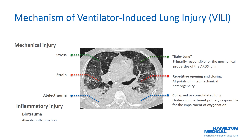The mechanisms of ventilator-induced lung injury are resultant of three specific attributes. Stress, or transpulmonary pressure, is associated with the difference between alveolar and pleural pressure and is primarily responsible for the mechanical properties of the ARDS lung. Strain is associated with the repetitive opening and closing of alveoli, specifically at points of micromechanical heterogeneity. Atelectrauma is associated with collapse or consolidated lung comprised of a gasless compartment primarily responsible for the impairment of oxygenation. Left untreated, this phenomenon ultimately results in an alveolar inflammatory injury called biotrauma.